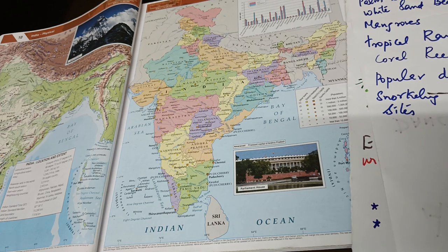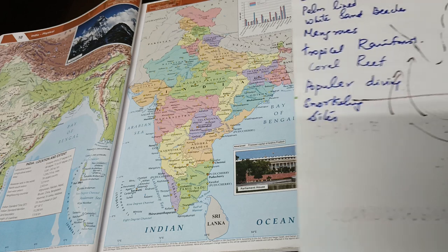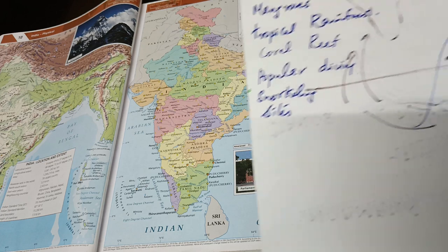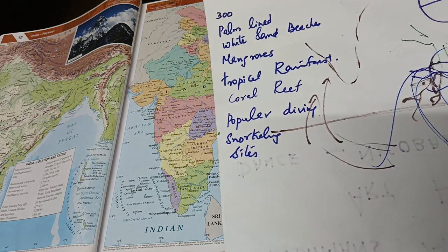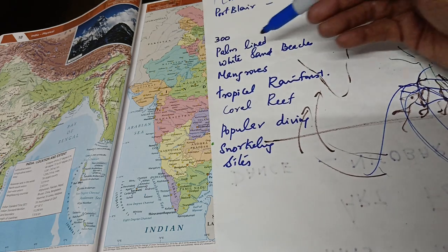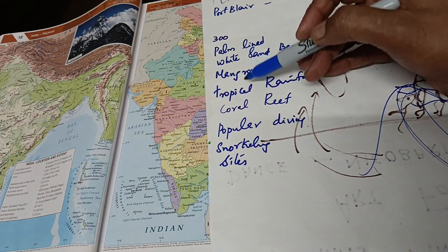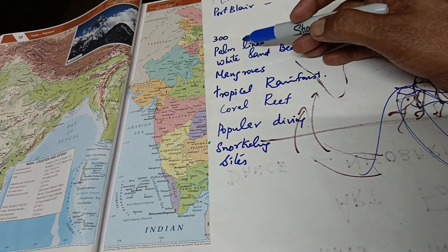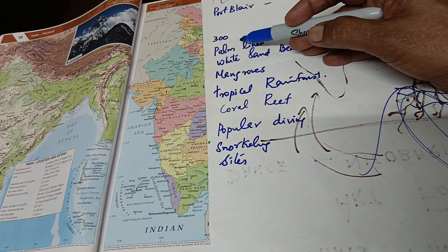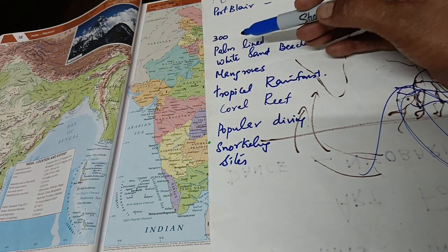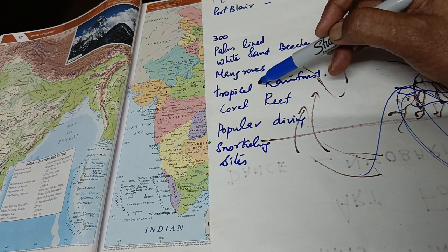These are the important features of the Andaman and Nicobar Islands. The monsoon festival is connected to geography and mathematics. What about the tropical rainforest? There may be heavy rainfall and high temperature — what is the rainfall, what is the temperature? That is connected to mathematics and physics.